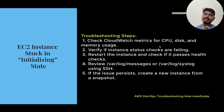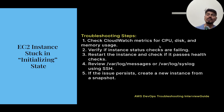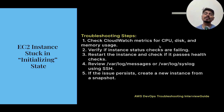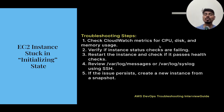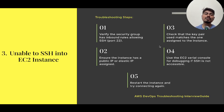Restart the instance and check if it passes the health check. Review the var/log messages and var/log/syslog using SSH. If SSH is not accessible, use the EC2 serial console to view logs without SSH. If issues persist, create a new instance from a snapshot — in real-time environments we keep backups of each instance in snapshot format, so we can quickly spin up a new instance.